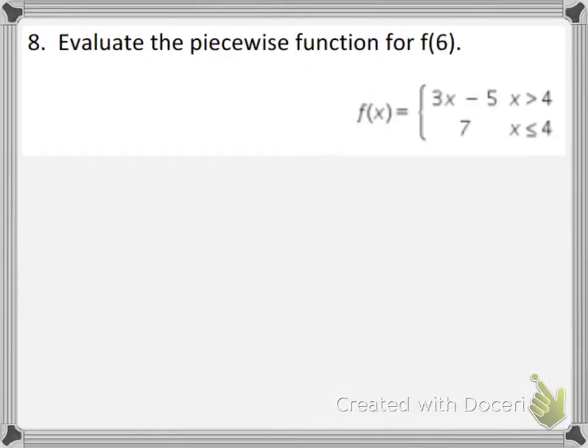Number 8: Evaluate the piecewise function for F of 6. That basically means you just plug in 6 as your x value into the function notation. And because in the top part of the piecewise function it says x is greater than 4, well then that means you are going to use the top equation, 3x minus 5, in order to evaluate this. You don't use the bottom one because it says only use domain values that are less than 4.